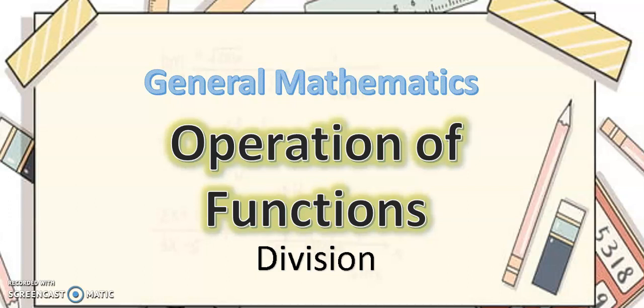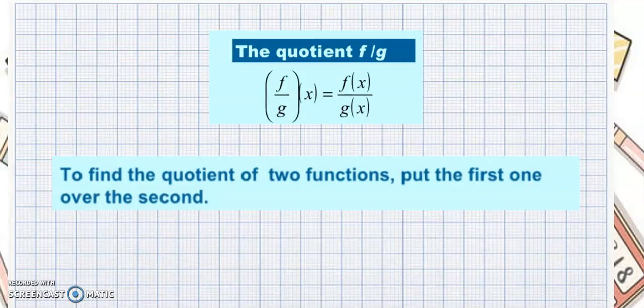For today's topic, I will teach you about operation of functions. But on this video, we will focus with division. So here is the rule in dividing functions. If you have the quotient of f over g, that would be f over g of x. That is also f over g of x. To find the quotient of two functions, you have to put the first one over the second.